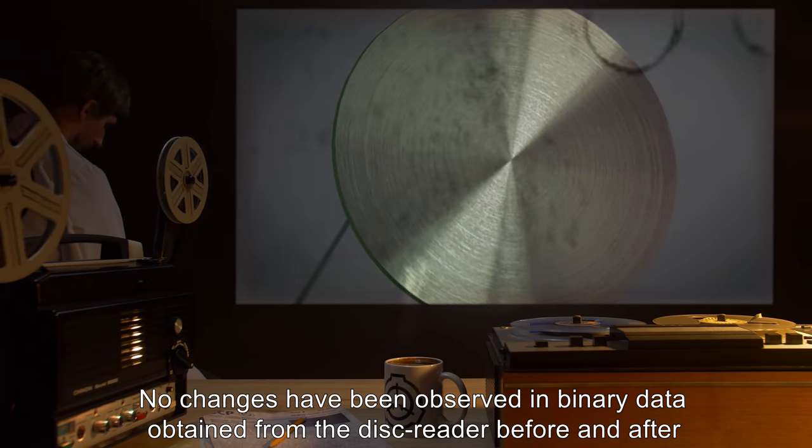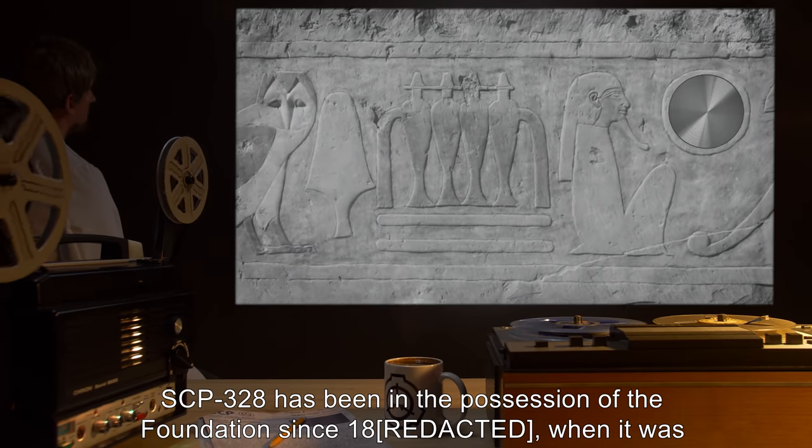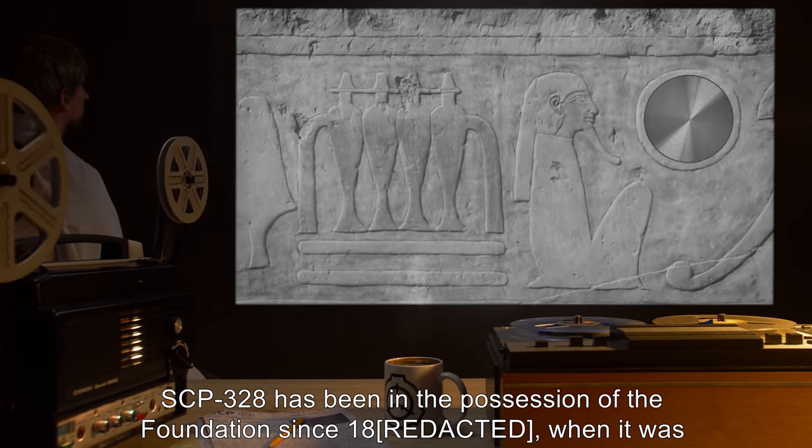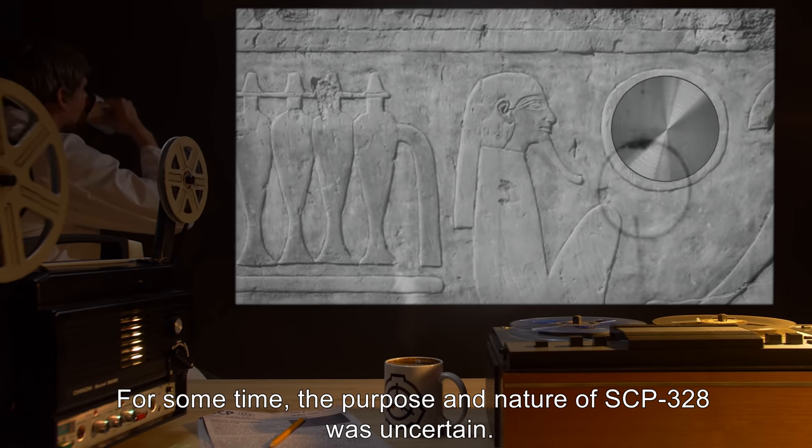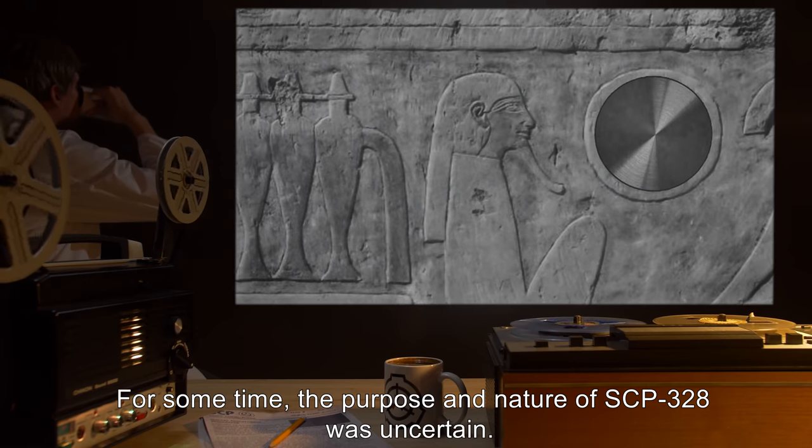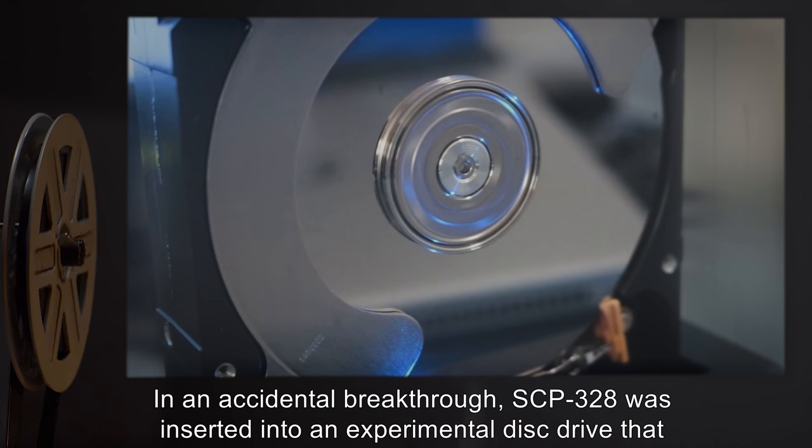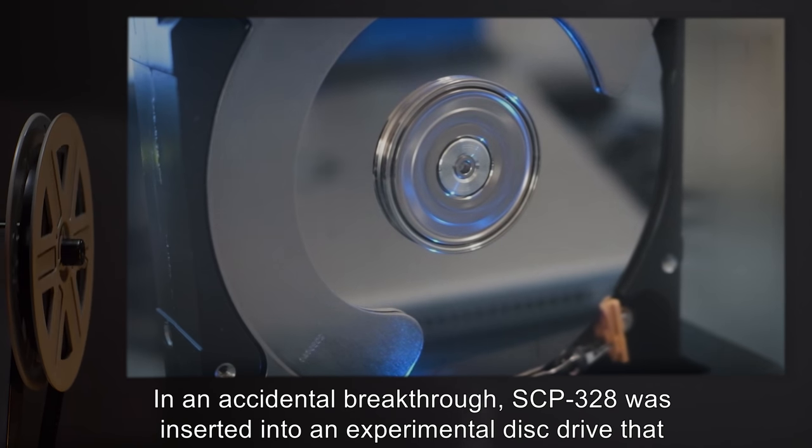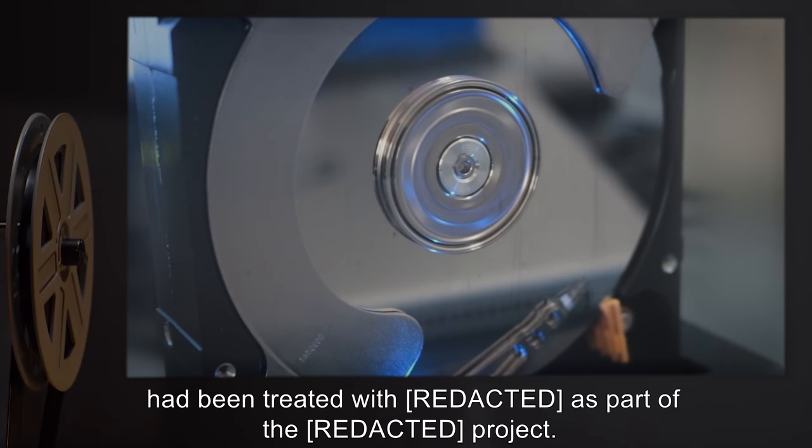SCP-328 has been in the possession of the Foundation since [18--], when it was recovered from [data expunged]. For some time, the purpose and nature of SCP-328 was uncertain. In an accidental breakthrough, SCP-328 was inserted into an experimental disk drive that had been treated with [redacted] as part of the project.